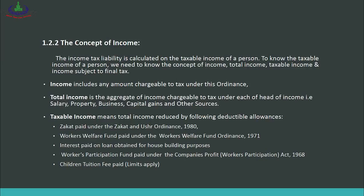When you subtract these deductible allowances from total income, the remaining amount is called taxable income, and tax is charged on it. These deductible allowances include: zakat paid under the Zakat and Ushr Ordinance 1980; workers' welfare fund paid under the Workers Welfare Ordinance 1971; interest paid on loan obtained for house building purposes; workers' participation fund paid under the Companies Profits Workers Participation Act 1968; and children's tuition fee paid, with certain specified limits.